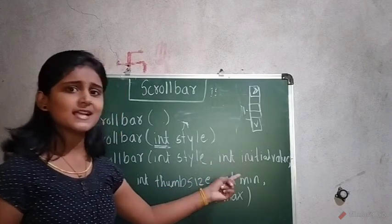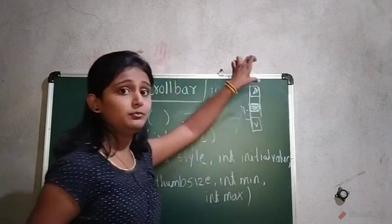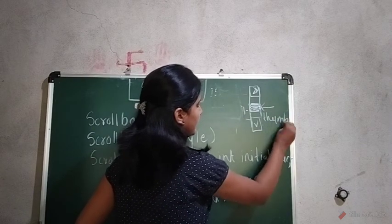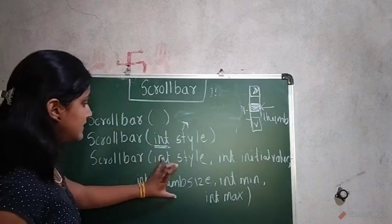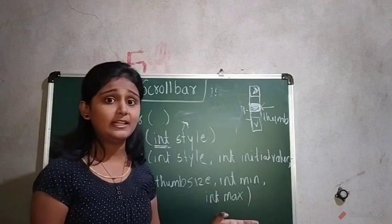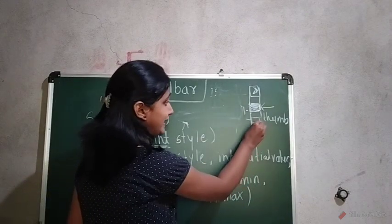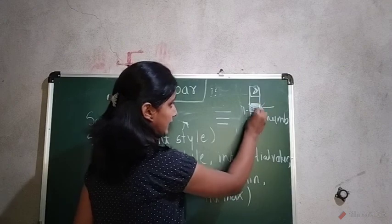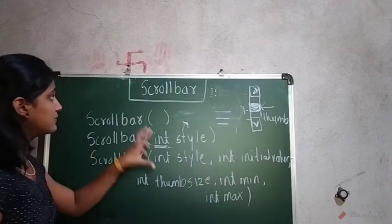The third constructor takes additional parameters: initial value, thumb size, min, and max. The initial value is the starting position of the slider or thumb. Thumb size is the height of the thumb. Min and max are the minimum and maximum values. When you click on the arrow it moves to the next line, but when you click in the middle it moves directly to the next page.